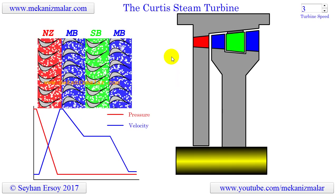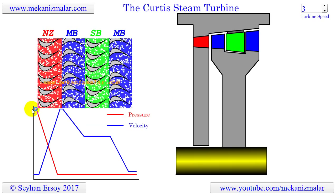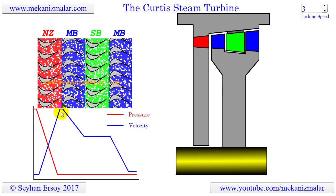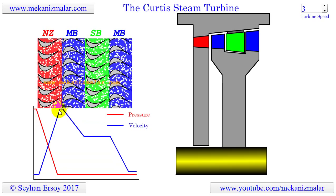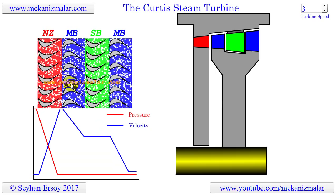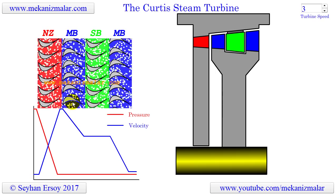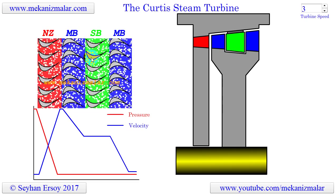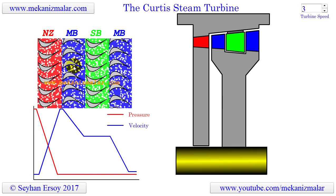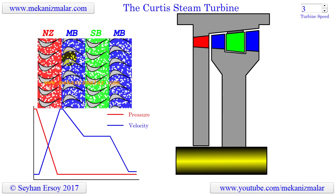In action type turbines, the potential energy of the steam is converted to kinetic energy in the nozzle. The high velocity steam leaving the nozzle strikes the rotating blades of the first stage of the turbine. The name action turbine refers to this striking action of the steam on the blades.